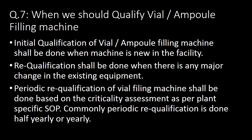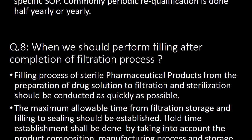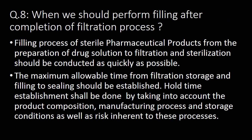Next important question: when should we qualify a vial or ampoule filling machine? Initial qualification shall be done when the machine is new in the facility. Re-qualification shall be done when there is any major change in the existing equipment. Periodic re-qualification of the vial or ampoule filling machine shall be done based on the criticality assessment as per the plant-specific SOP; commonly, periodic re-qualification is done half-yearly or yearly.